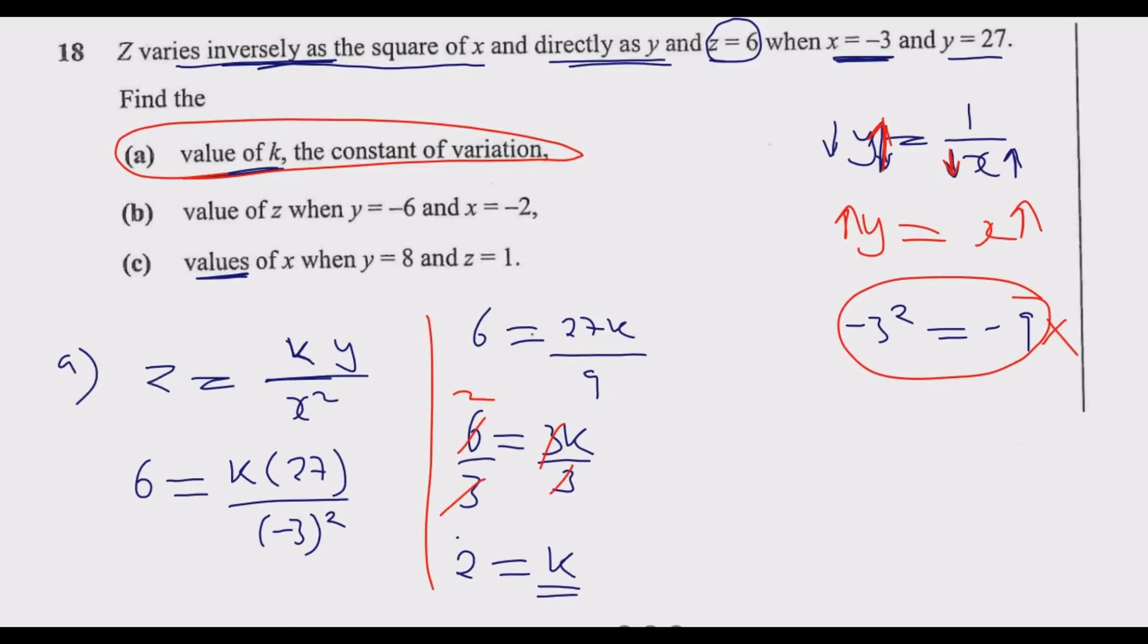Going back to part (b): value of z when y equals negative 6 and x equals negative 2. If you've messed up k, there's no way you get b or c.